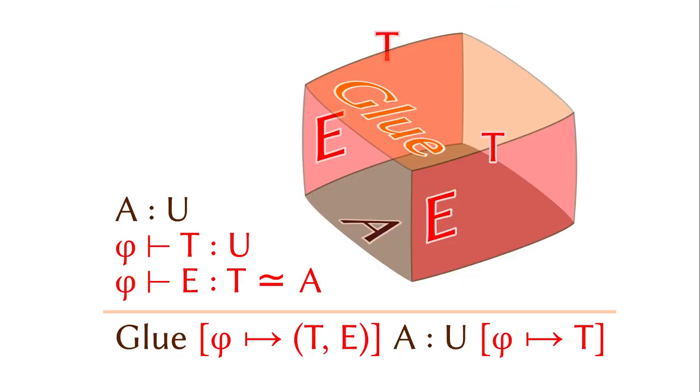Let's go through the formal rules more carefully. The first one is the formation rule. Suppose there is a type A and a partial type T that is equivalent to the type A under the constraint phi. The glue type is a type. Moreover, it is judgmentally equal to capital T under the constraint phi.